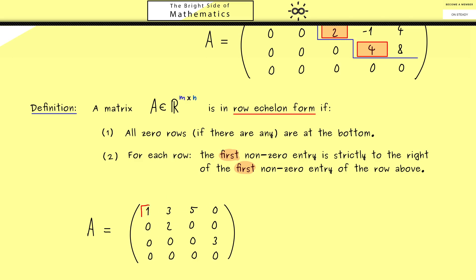In the first row we see our first pivot. In the second row, strictly to the right of the first pivot, we find the second pivot. Note that what appears to the right of that entry does not matter for the row echelon form — you can have many different row echelon forms with the same pivots. The third pivot is the 3 in the third row, also strictly to the right of the pivot above. The first condition is fulfilled because the zero row is at the bottom. In a zero row we can't find a pivot, so for this 4×4 matrix we have only 3 pivots.